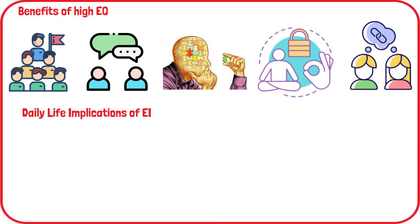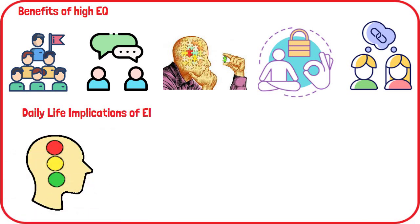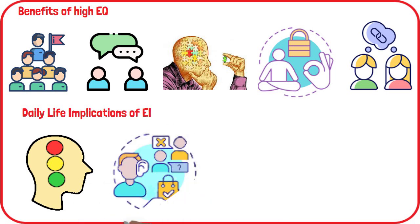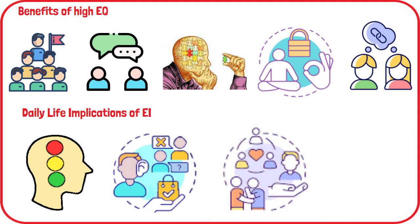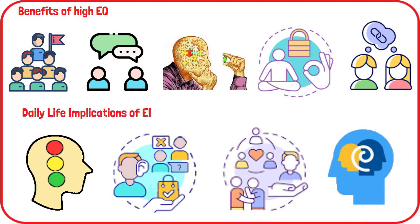Emotional intelligence can be applied and developed in everyday situations. For instance, thinking before reacting: pause and reflect before responding to emotionally charged situations to ensure a measured and rational approach. Listening: pay close attention to both verbal and non-verbal cues to understand others better. Empathizing: put yourself in others' shoes to gain deeper insights into their emotions and perspectives. Reflecting: consider how your emotions affect your decisions and interactions, and analyze how others' emotions influence their behaviors.